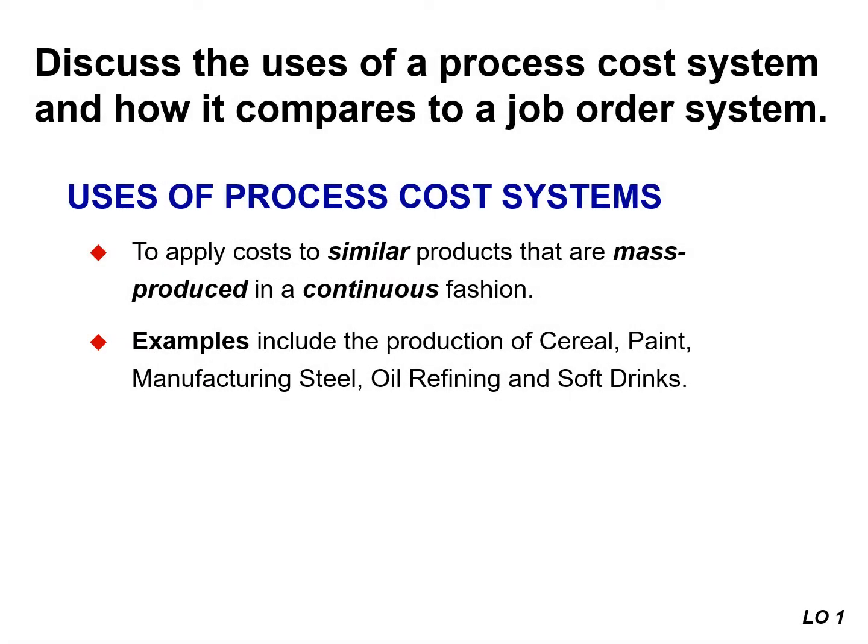Companies use process cost systems to apply cost to similar products that are mass produced in a continuous fashion. Manufacturers of cereal, paint, steel, oil, and soda would all use a process cost system.